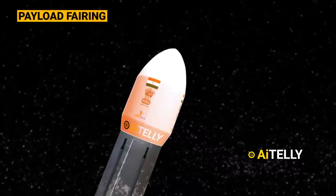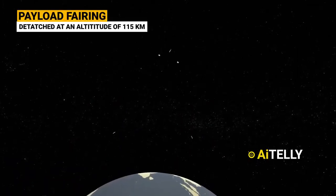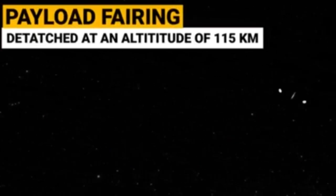Step number four, the payload fairing housing the satellite is subsequently detached at an altitude of 115 kilometers above the planet, approximately 217 seconds after launch.